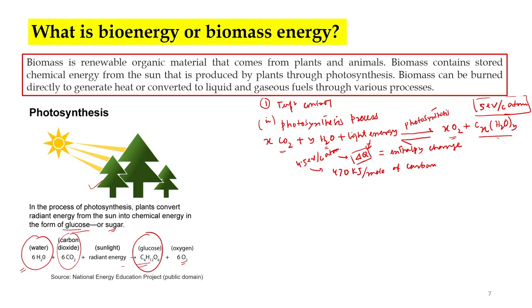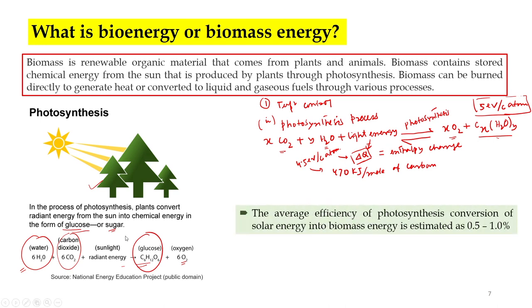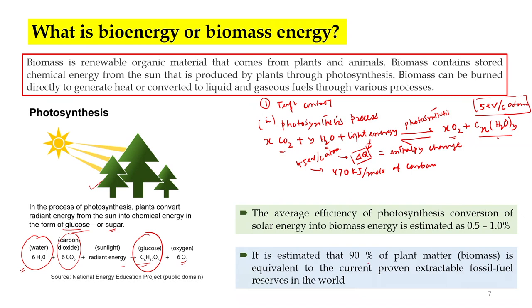When solar radiation falls on plants, what finally we get is glucose, which is stored in the plant. The average efficiency of photosynthesis conversion of solar energy into biomass energy is about 0.5 to 1 percent, because when solar radiation falls on plants, some is reflected, some transmitted, and some absorbed — the absorbed component is very small, but sufficient to provide all kinds of energy to living things. It is estimated that 90 percent of plant matter — which is biomass — is equivalent to the current proven extractable fossil fuel reserves in the world.